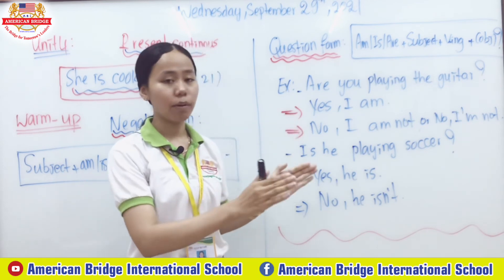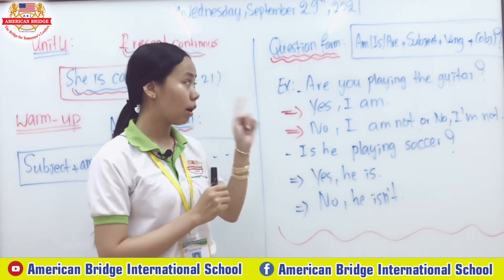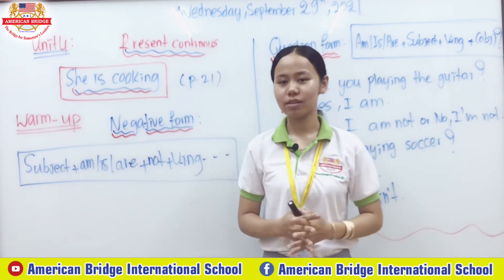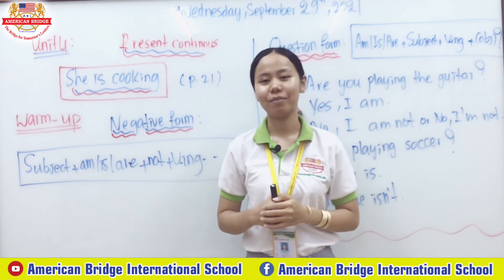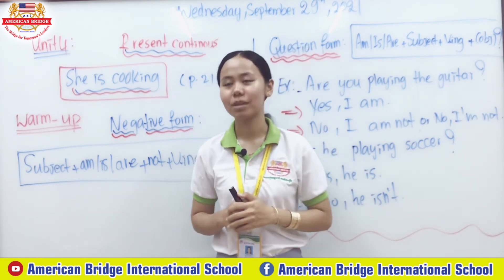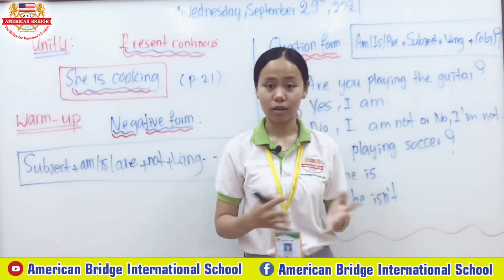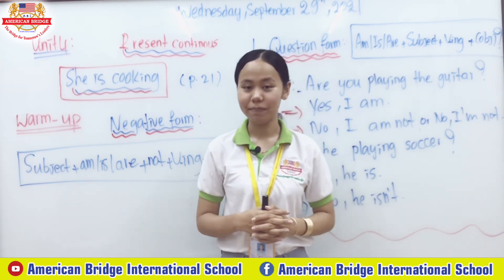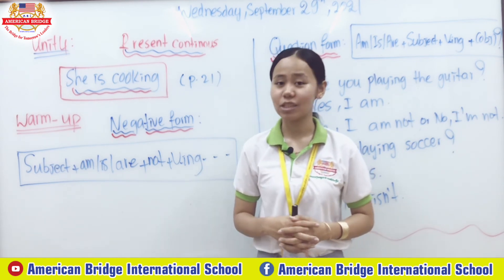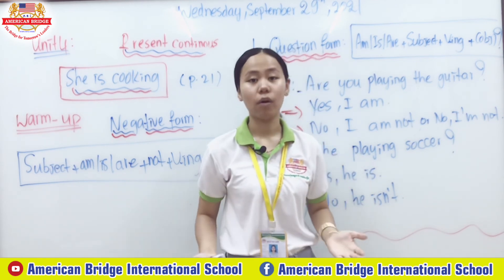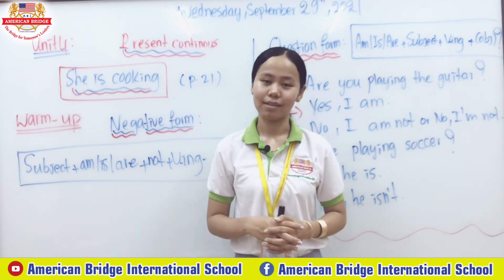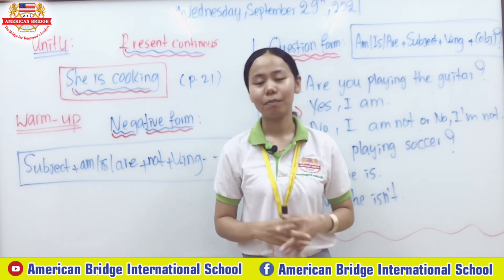That is the question form of the present continuous. We have the verb to be in front of the subject, then verb-ing, then the activity (optional), then a question mark. Today we covered the question form of the present continuous. Please practice the exercises and your homework to understand more. Thank you everyone for your attention — see you tomorrow, and in the first session tomorrow we will continue our grammar lesson. Bye bye!